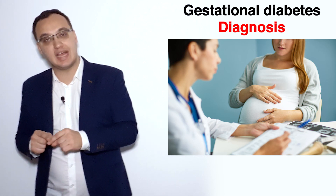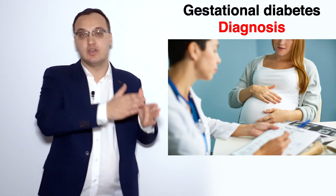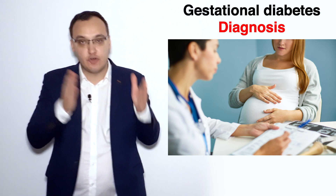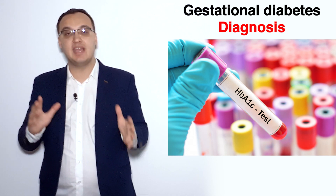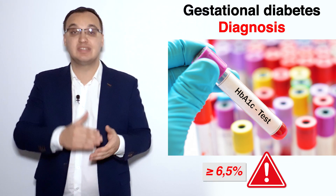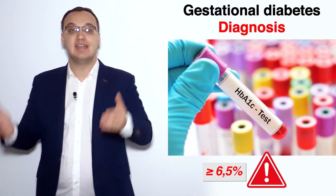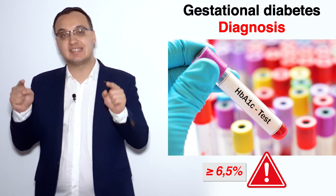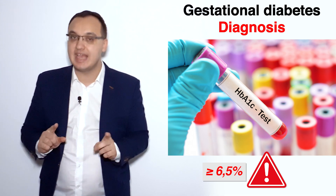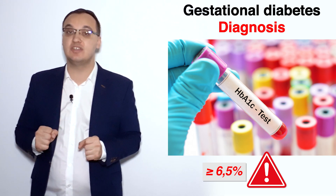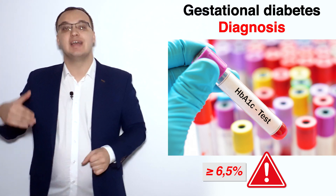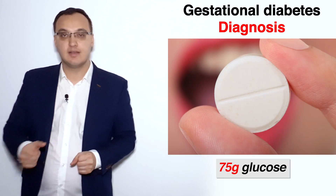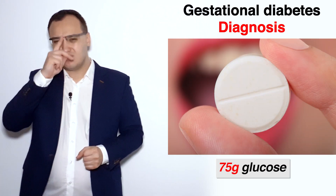The first thing the doctor does before continuing with the pregnancy is, at the first prenatal visit, check the hemoglobin A1c level. This screens patients: if the level is higher than 6.5% at the beginning, the risk of gestational diabetes will be very high. We don't say the patient has gestational diabetes yet, but that she can develop it.